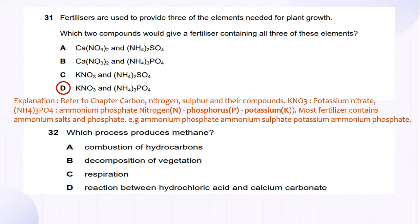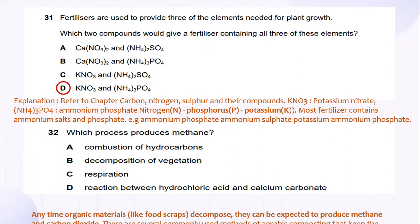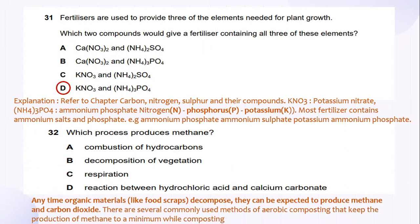And which process produces methane? What is methane? Anytime organic materials like food scraps decompose, they can be expected to produce methane and carbon dioxide. And there are several commonly used methods of aerobic composting that cap the production of methane to minimum while composting. So, the answer would be decomposition of vegetation.